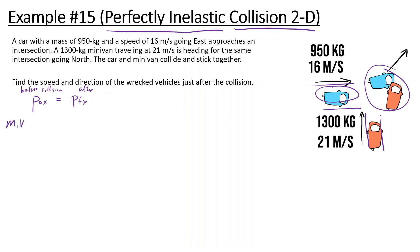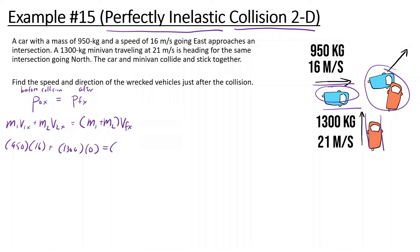We have mass of the first car times velocity in the X direction, plus mass of the second car times velocity in the X direction, equal to M1 plus M2 times V final in the X direction. So: 950 times 16, plus 1300 times 0 — the minivan is only going north so its X velocity is zero — divided by 950 plus 1300, gives us a final velocity of 6.75 meters per second in the X direction.